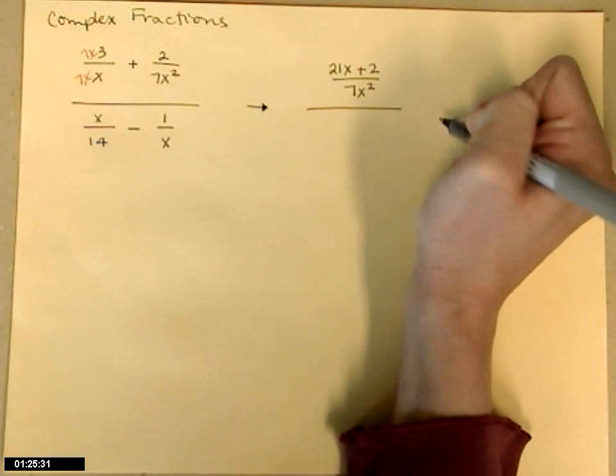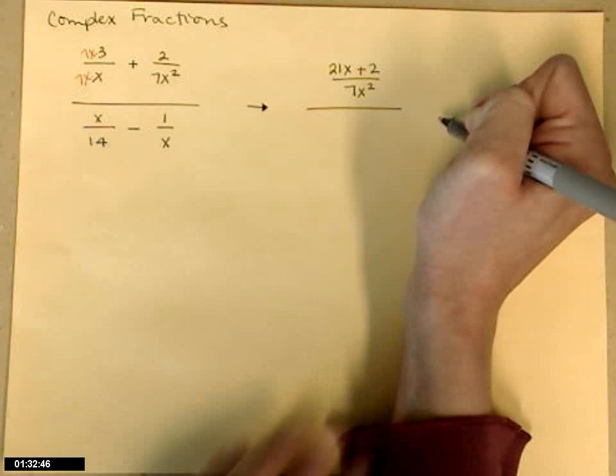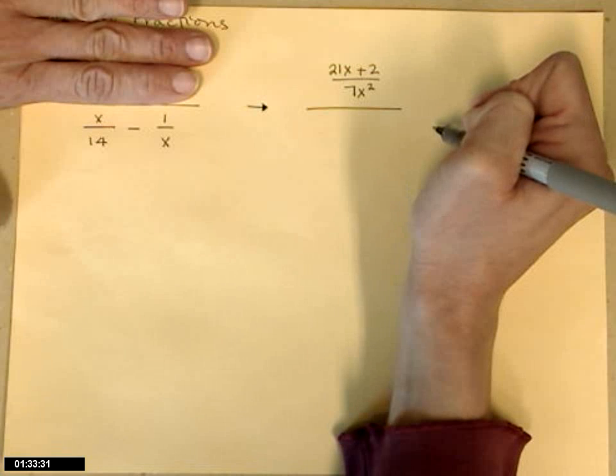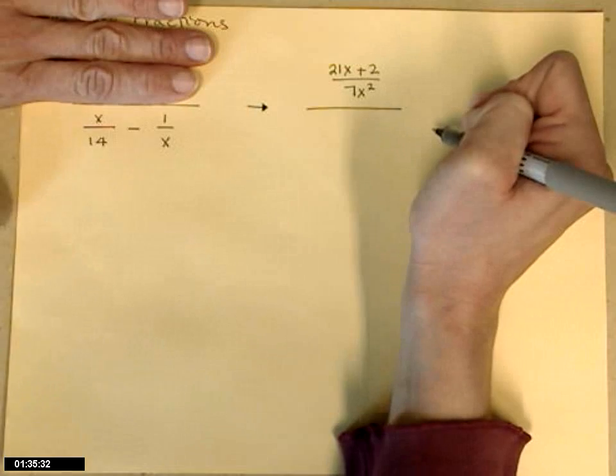And now I'm doing x over 14 minus 1 over x and figure out what the common denominator is there. So between 14 and x, that common denominator would just be 14 times x.